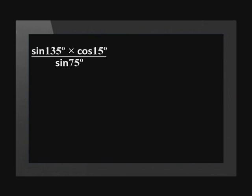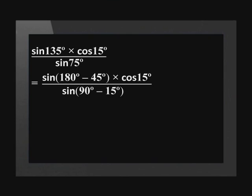This means that we will have to use our co-function reductions. 15 degrees and 75 degrees are complementary angles. This means that we can either change cos(15°) to sine(75°), or we can change sine(75°) to cos(15°). The trick with these is only to change one of them. Let's change sine(75°) and reduce the ratio of sine(135°). This gives us sine(180° − 45°) times cos(15°) over sine(90° − 15°).